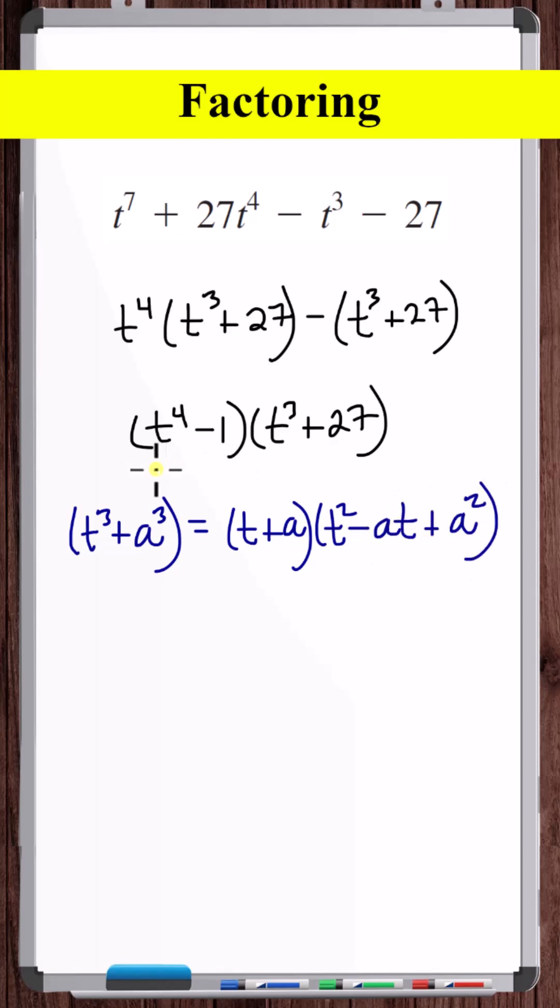So difference of two cubes, we've got t squared minus one squared. And here are sum of two cubes, t and three.